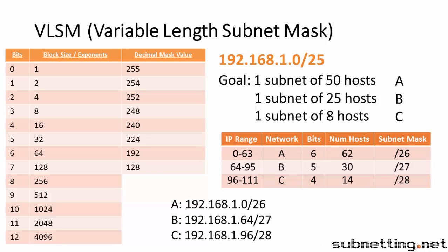I want to point out something. When we were calculating our subnet mask, we had 6 bits and we counted from 24 to 26 to get to slash 26. There's another way we could have calculated that, which is simply to subtract the number of host bits from 32. So 32 minus 6 is 26. 32 minus 5 is 27. 32 minus 4 is 28. It's important to understand that, and you'll see why in a moment.